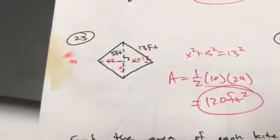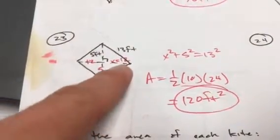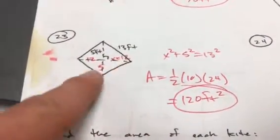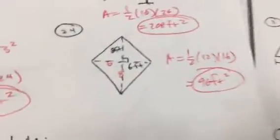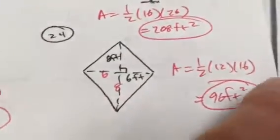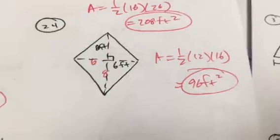On this one, you've got 5 and 5. One diagonal is 10. 5 blank, 13. That blank is 12. If you don't know that, Pythagorean theorem. If that's 12, that's 12. The whole thing is 24. Divide them by 2 when you find the product. If that is 8, so is that. The whole diagonal is 16. If that is 6, so is that. The whole diagonal is 12. Multiply and divide.